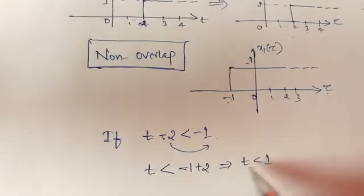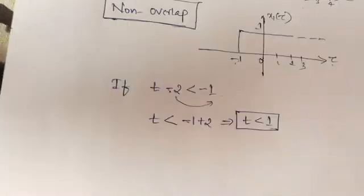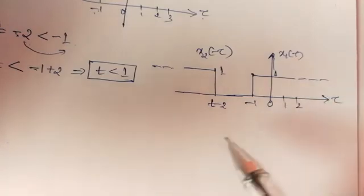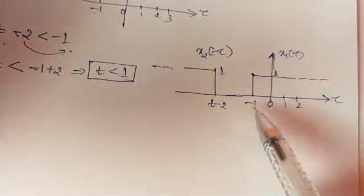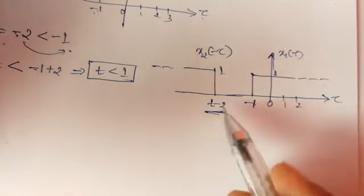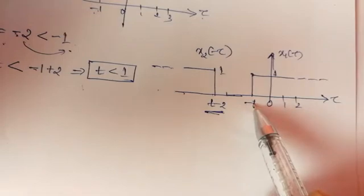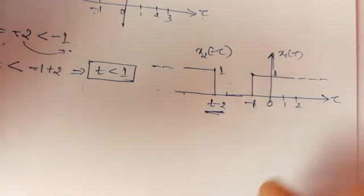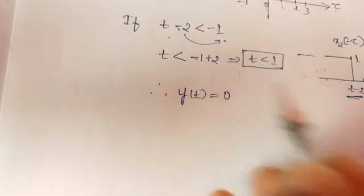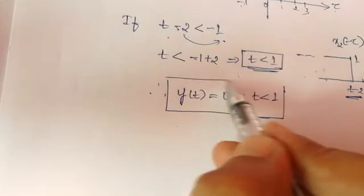So if t < 1, we check this case. The first signal is kept constant as x1(τ). The second signal is shifted so that its starting point t−2 is less than −1 — we can place it anywhere as long as t−2 < −1. If there is no overlap, there is no multiplication of amplitudes. Hence the result of convolution is 0 for the non-overlap case, i.e., when t < 1.